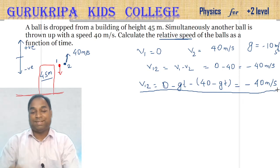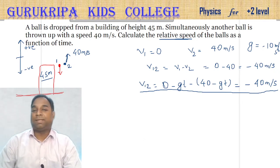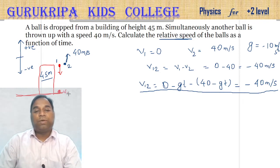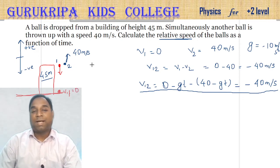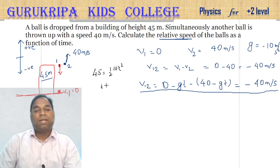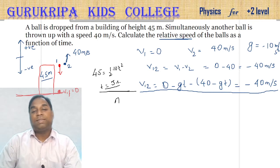This result holds only until ball 1 hits the ground. Ball 1 hits the ground when 45 = ½ × g × t², i.e., 45 = ½ × 10 × t², giving t = 3 seconds. So V1 with respect to 2 equals minus 40 meters per second is valid only up to t = 3 seconds.